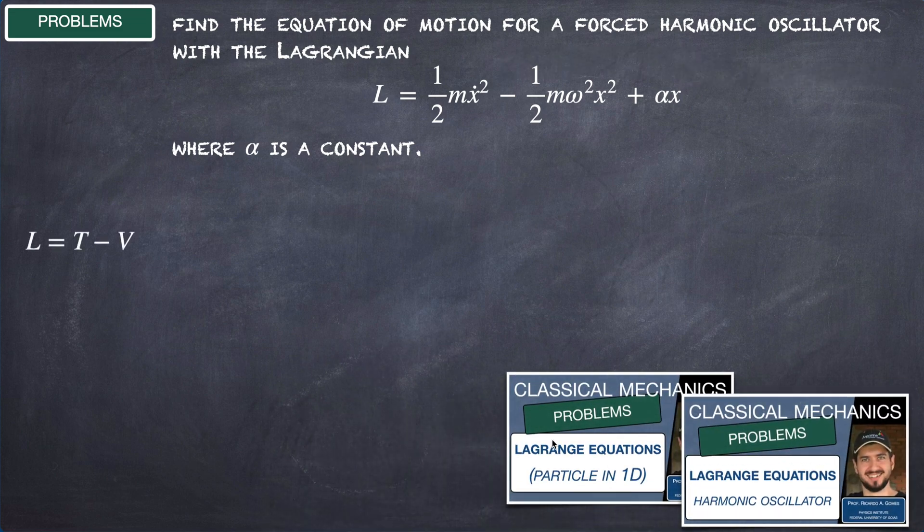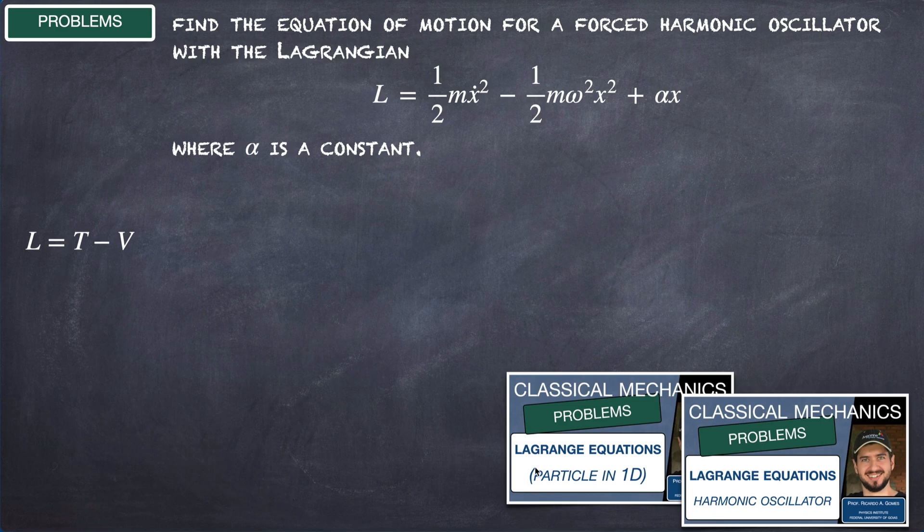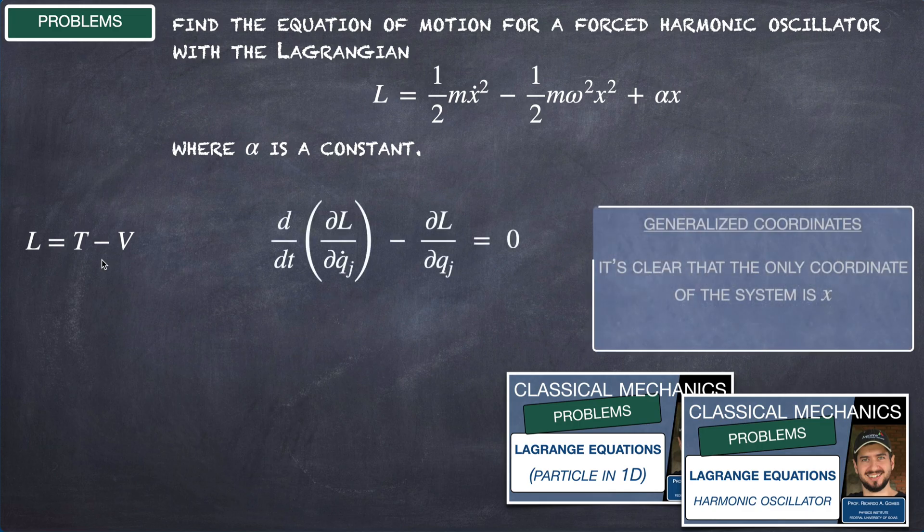We are going to follow the same procedure we used in previous problems, for instance to solve the equation of motion for a particle in one dimension and for the harmonic oscillator. This is the Euler-Lagrange equation.